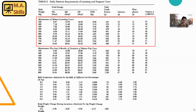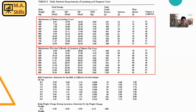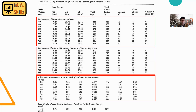For example, we have requirements for maintenance, and after that, requirements for maintenance for mature cows that are in the dry period and the last two months of gestation. As you can see, nutrient requirements are a little bit higher than normal maintenance requirements. Then we have requirements for milk production based on milk fat percentage and body weight change during lactation.